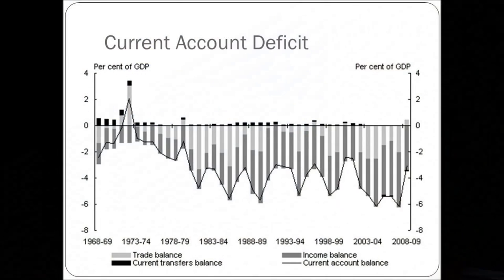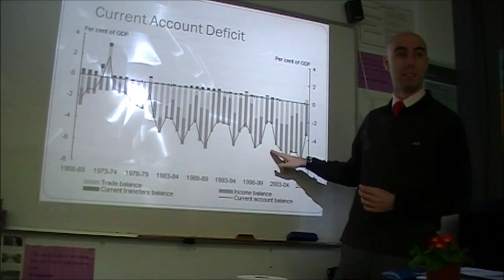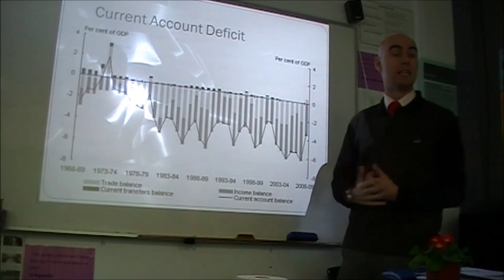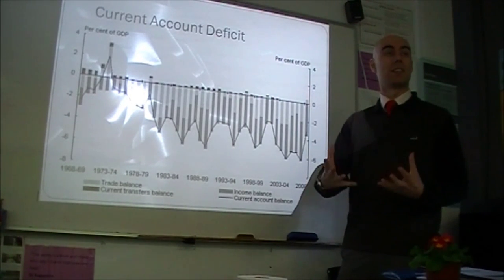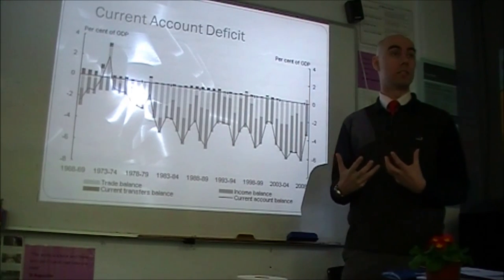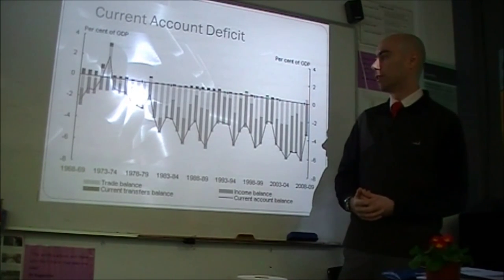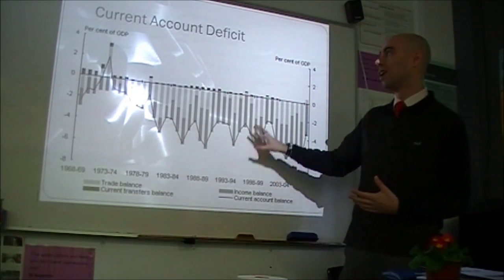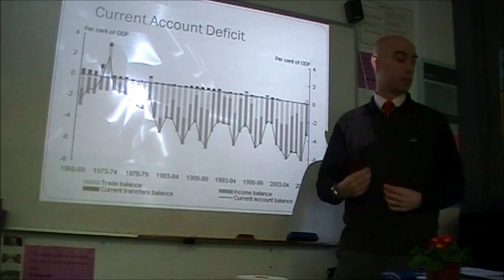Why is this a problem? A current account deficit acts as a handbrake on the economy. The Asian financial crisis of the late 90s was triggered because Asian countries had current account deficits of about 6-7% of GDP — and Australia hits about 6% of GDP quite often. International investors lose confidence, start to take their money out, currencies crash, and it spirals. A high, unsustainable current account deficit is a handbrake on economic growth.